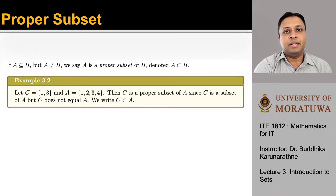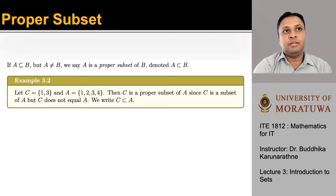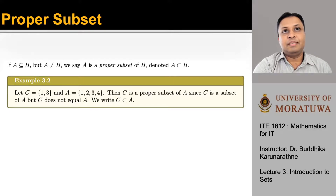Now let's look at what is meant by a proper subset. If A is a subset of B but A is not equal to B, then A is said to be a proper subset of B, denoted with a different notation. For example, let C be {1, 3} and A be {1, 2, 3, 4}. Then C is a proper subset of A since C is a subset of A but C does not equal A.